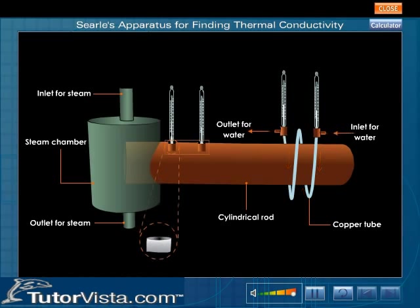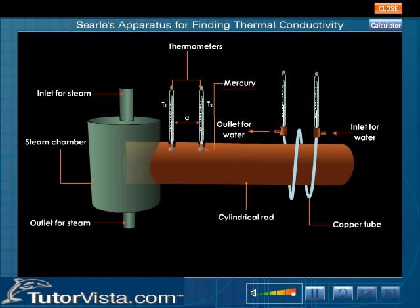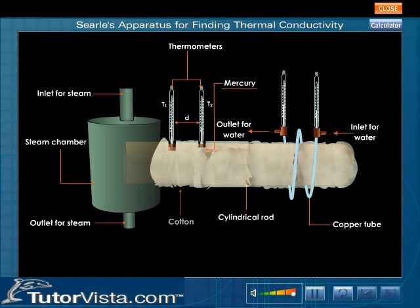There are two holes filled with mercury on the cylindrical rod, and two thermometers are placed in these holes. The whole apparatus is entirely covered with an insulating material like cotton to prevent heat loss from the sides.